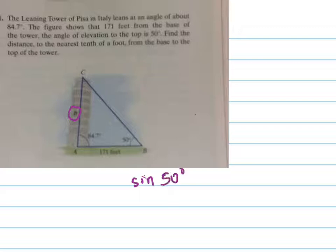The sine of 50 degrees over B equals, now I'm going to find out what this angle is right here by adding these two together and subtracting it from 180 which would be 45.3.